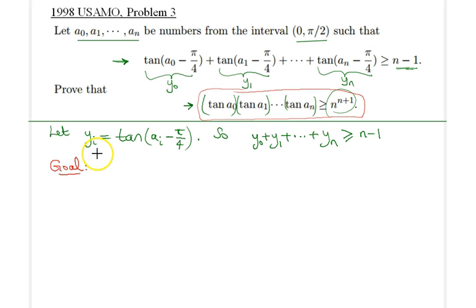Tangent a sub i can be equivalently written as tangent of a sub i minus π over 4 plus π over 4. Just a simple trick here. And then we can apply the addition formula for the tangent.